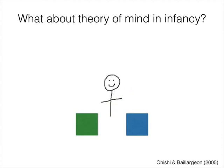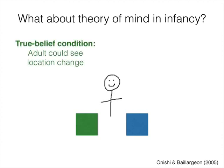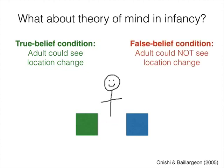Then in phase two, the toy was moved from one box to the other. The critical manipulation was that in the true belief condition, the adult could see that the toy changed locations. But in the false belief condition, her eyes were covered, and therefore she could not see that the toy moved.